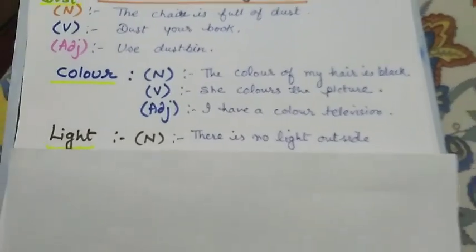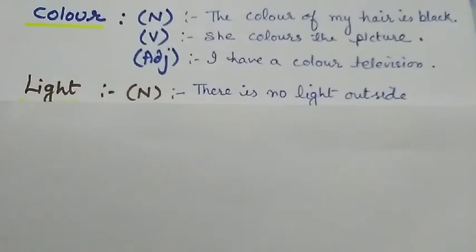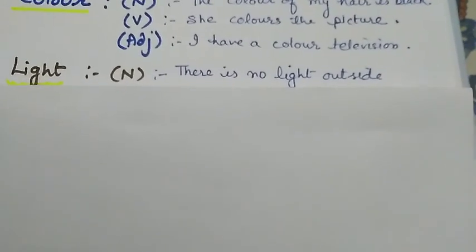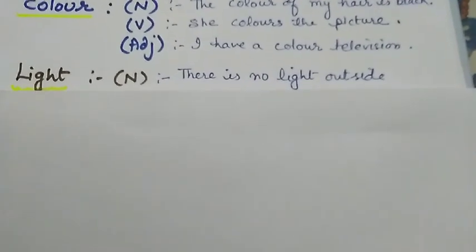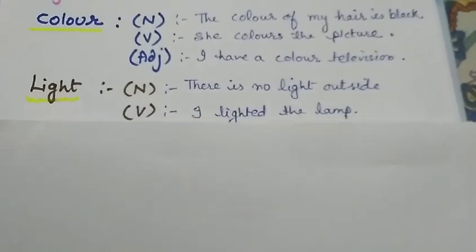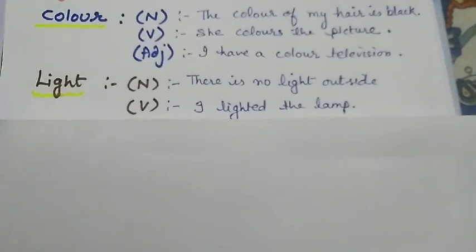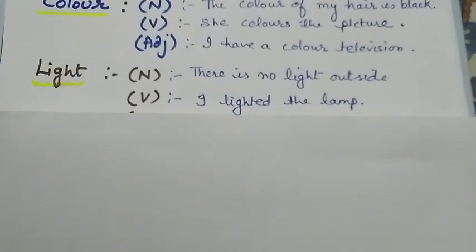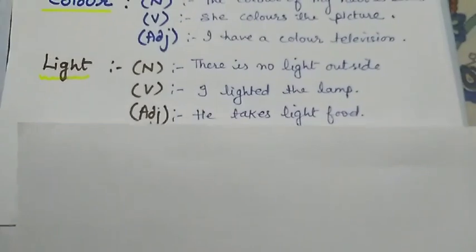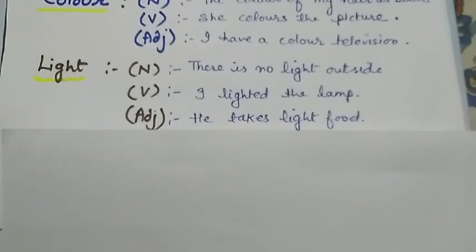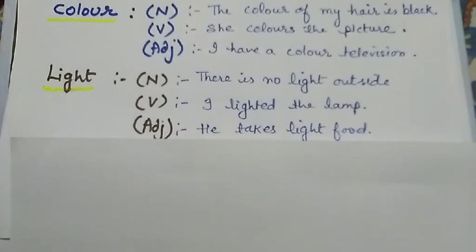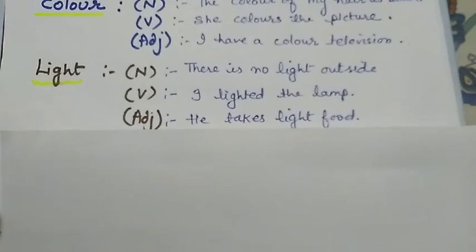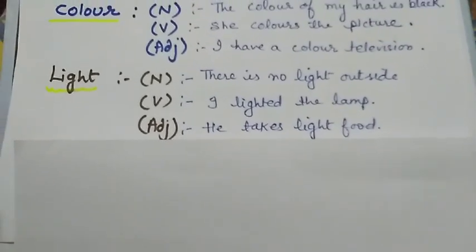The word is 'light.' As a noun: There is no light outside - there is no light. As verb: I lighted the lamp - I lit the lamp. You can use any verb form. As adjective: He takes light food - he eats light food. The three sentences are totally different from each other with different meanings.